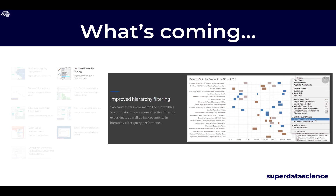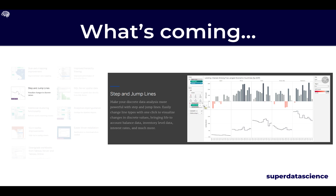They have also improved the hierarchy filtering. In previous versions, we had to use 'all relevant values in data' or 'all values in database' when updating filters based on prior selections. This was difficult with multiple filter levels, and there were workarounds like cascading filters. No more — Tableau now gives us the option to filter and apply only to the values in the hierarchy.